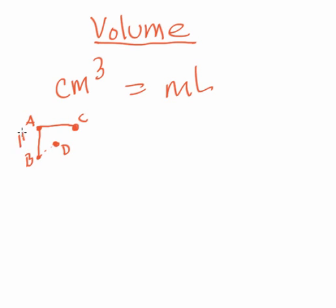From point A to point D I have a height. From point A to point C I have a width. And from point B to point D I have a length. So what I'm looking at is an equation of length times width times height, which would give me a volume measurement in cubic centimeters.